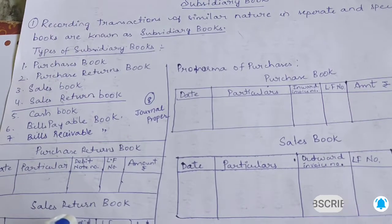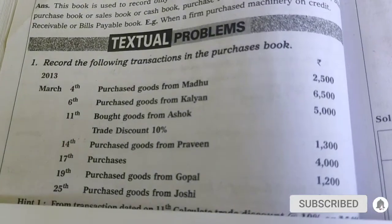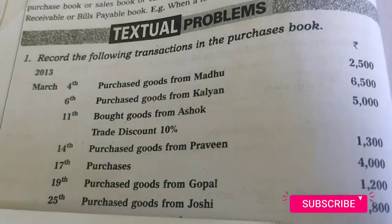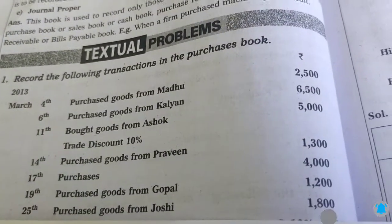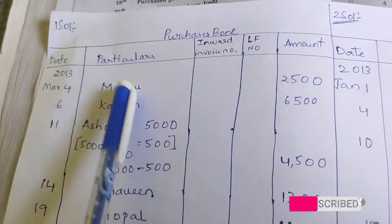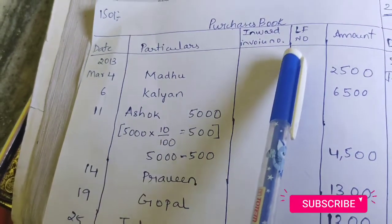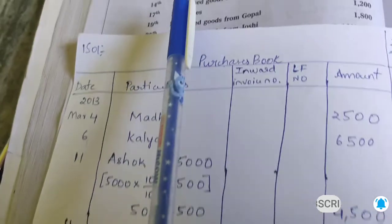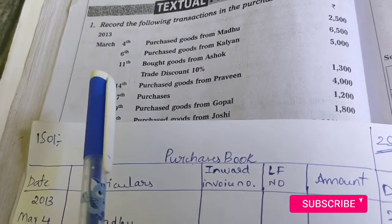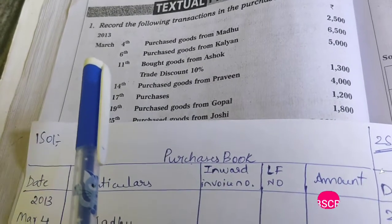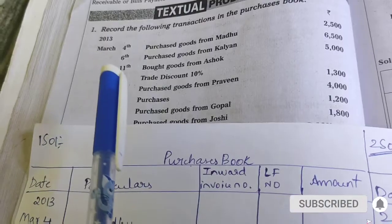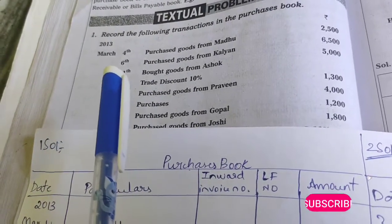Now let us go into the problem. The problem appears in the exam in this model format. The instruction says: record the following transactions in the purchases book. So first we draw the format with columns — Date, Particulars, Invoice Number, LF, and Amount. The first transaction: on March 4th, purchased goods from Madhu for 2500. Here we can see these are credit purchases. If cash is mentioned, we should not record it — only credit transactions are allowed.